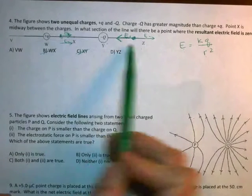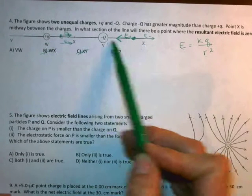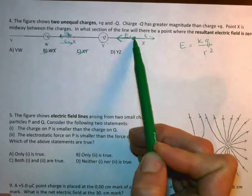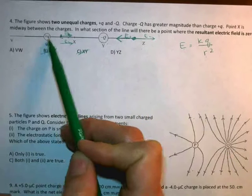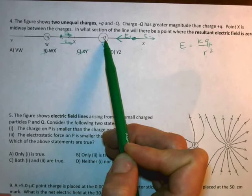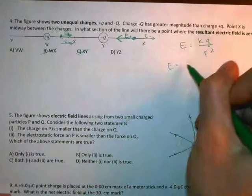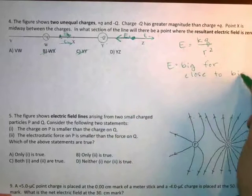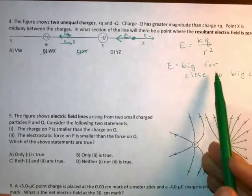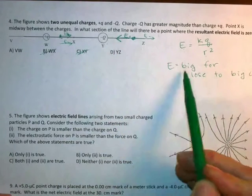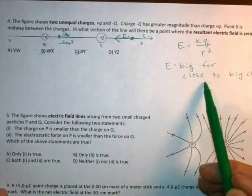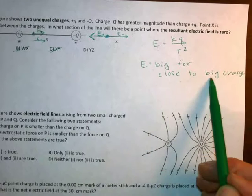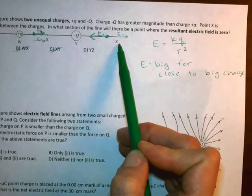So right now we have a big charge and a little charge and we also have some distances. And what we'd like to do in order to have these two be equal and cancel each other out, we'd like to kind of be close to a little charge or far away from a big charge. So E is big when close to big charge. But if we want these to be the same length, we don't want E to be super big or super small. We want it to be somewhere in between. So we want to either be close to a small charge or far from a big charge in order to have a chance of having these things cancel each other out.